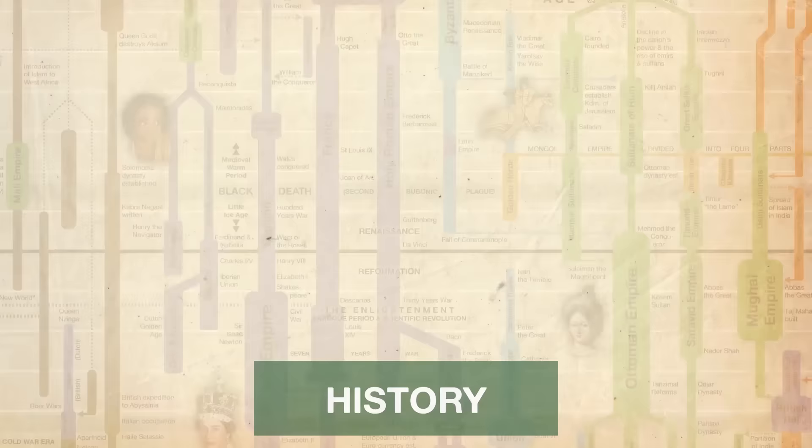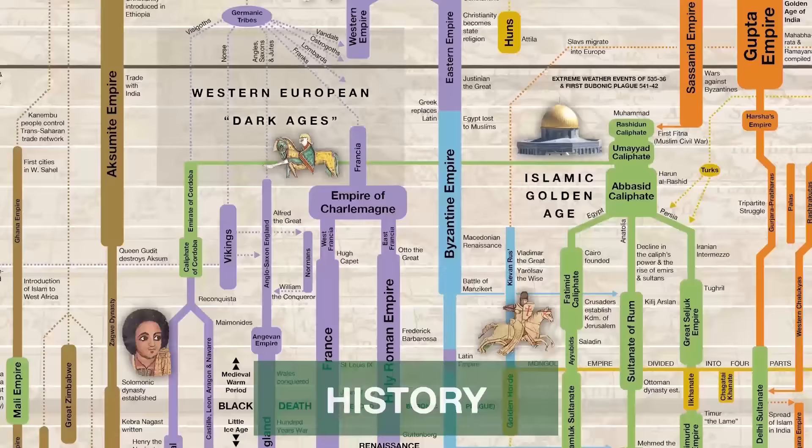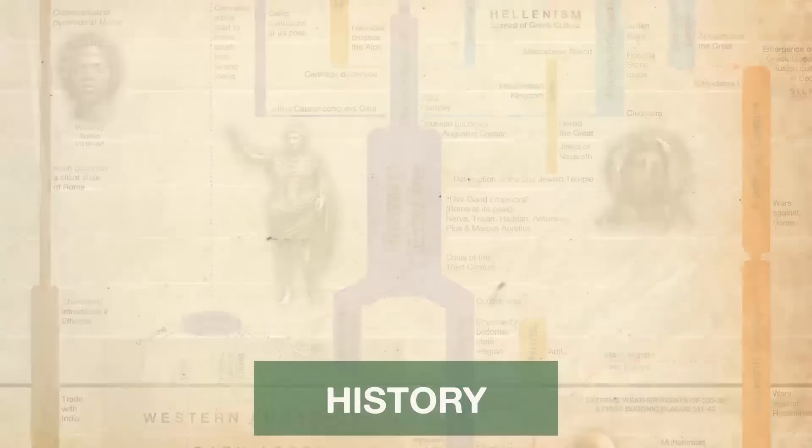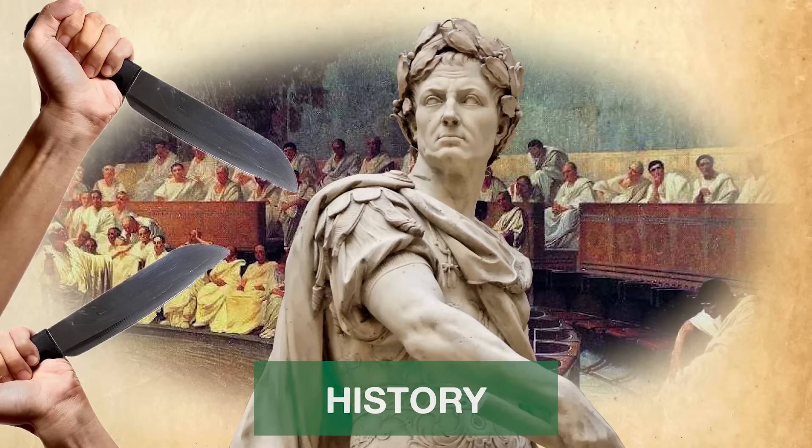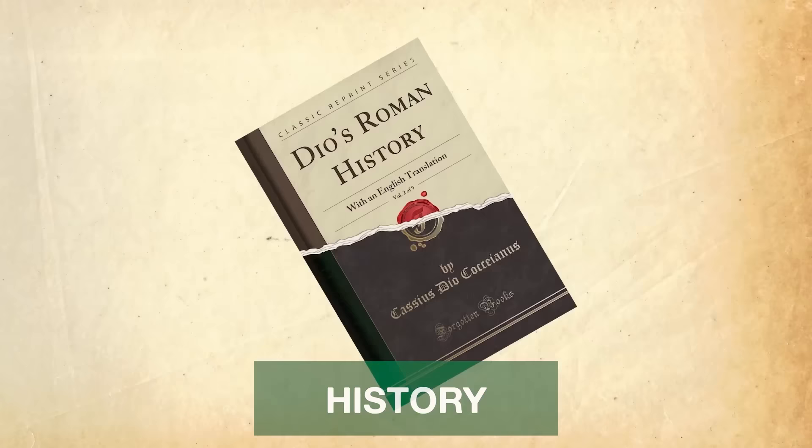Before we begin, let me explain three key terms that I will be using in this video: history, mythology, and legend. Let's start with the word history. History is a record of events that happened in real life to real people. So, for example, we know that in the year 49 BC, a man named Julius Caesar crossed a river called the Rubicon and then went on to become the dictator of Rome for the next five years before being stabbed to death by a bunch of senators. This is not just a story that someone made up. It's history. It really happened.